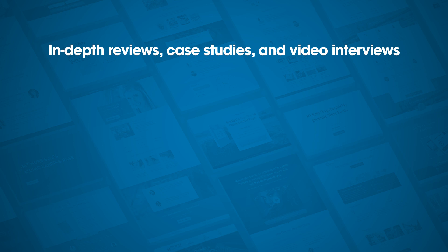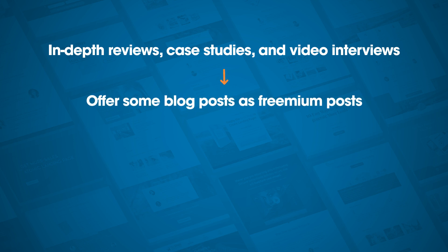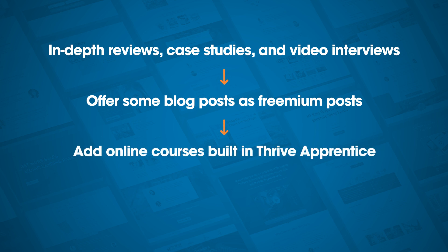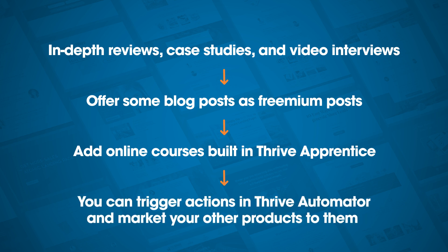We've gone through a few different types of membership sites you can create, but don't forget that you can also create a membership that combines several of these ideas. So your membership might include in-depth reviews, case studies, and video interviews — all of these can be placed inside blog posts and protected by using a particular category. In addition, you can offer some blog posts as freemium posts, add online courses built in Thrive Apprentice, and once someone becomes a member, you can trigger actions in Thrive Automator to market your other products to them.